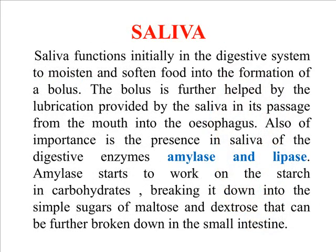In the salivary gland, saliva is one of the major components responsible for the digestion of food as well as prevention of microbial growth inside the oral cavity. Saliva functions initially in the digestive system to moisten and soften food into the formation of a bolus. A bolus is further helped by lubrication provided by saliva in its passage from the mouth into the esophagus. One of the important functions of saliva is to contain the digestive enzymes amylase and lipase. Amylase works on the starch in carbohydrates, breaking it down into the simple sugars maltose and dextrose, which can be further broken down in the small intestine.